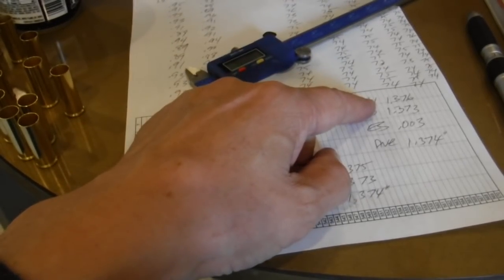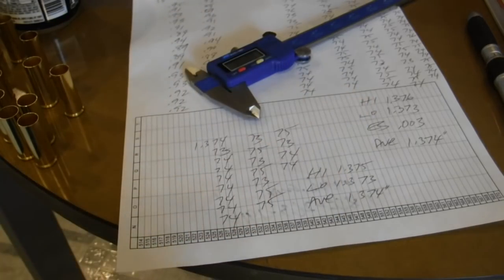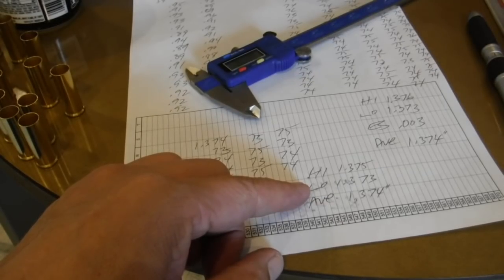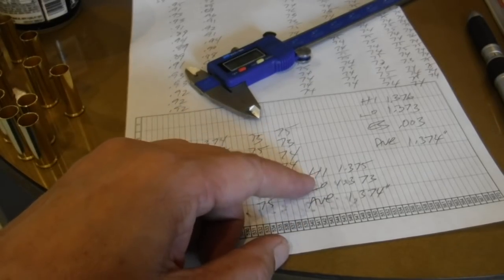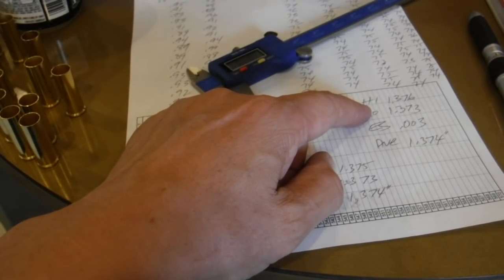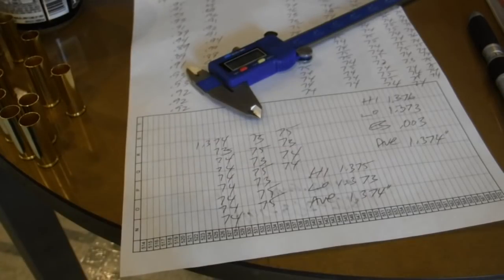but we did pick up the 1.373 low. So, the extreme spread is 0.002, which is less than the spread measuring all 100, and the average is the same.